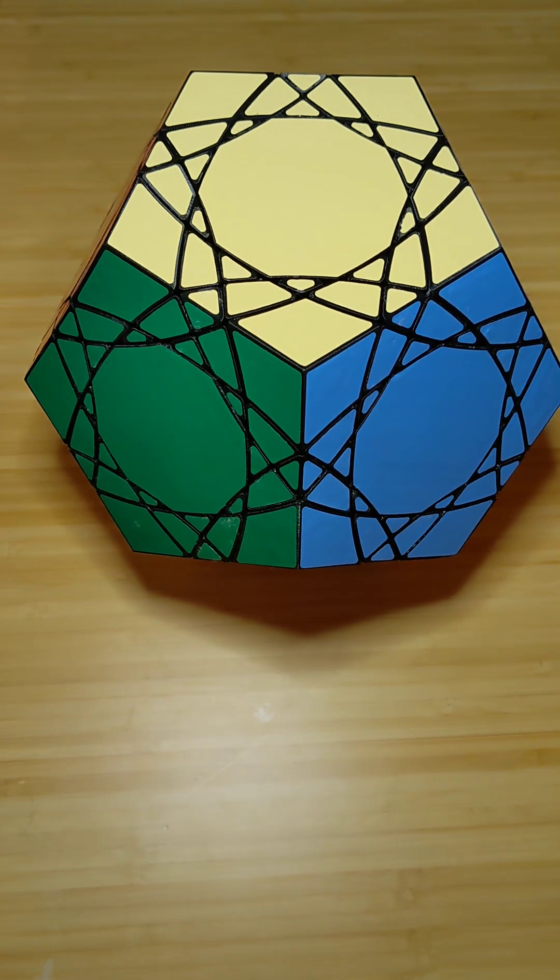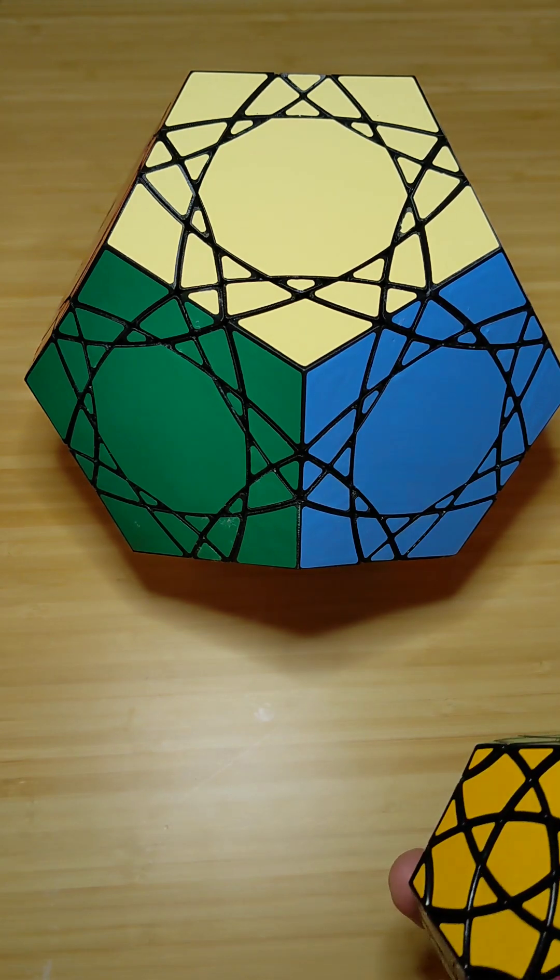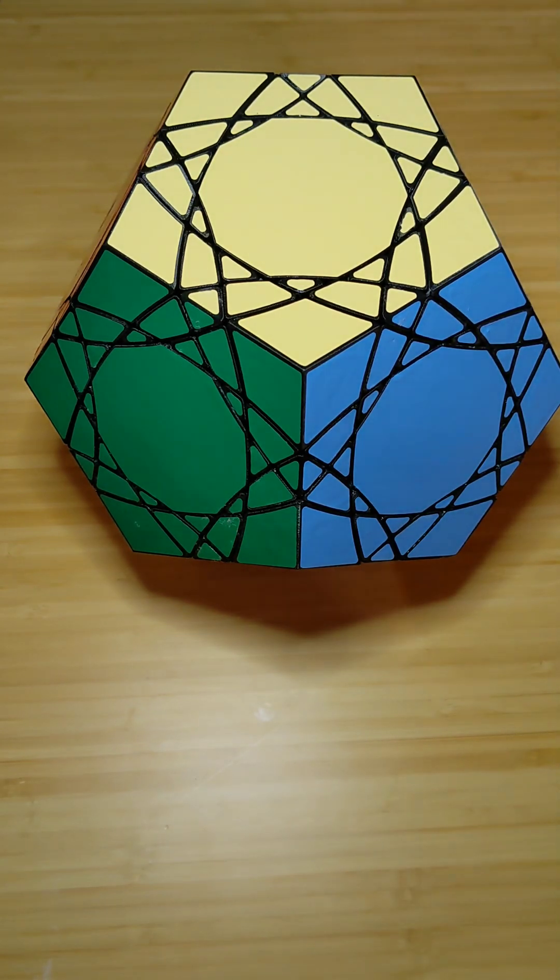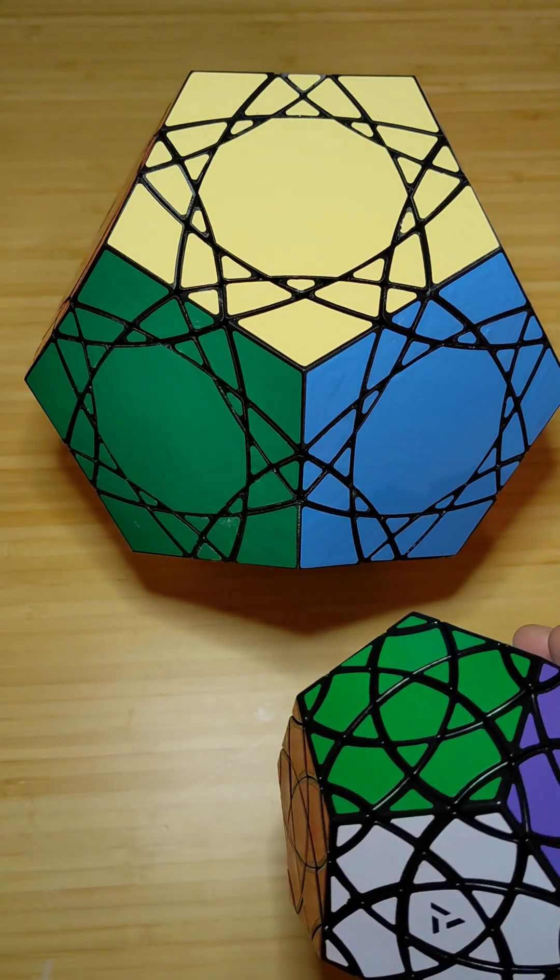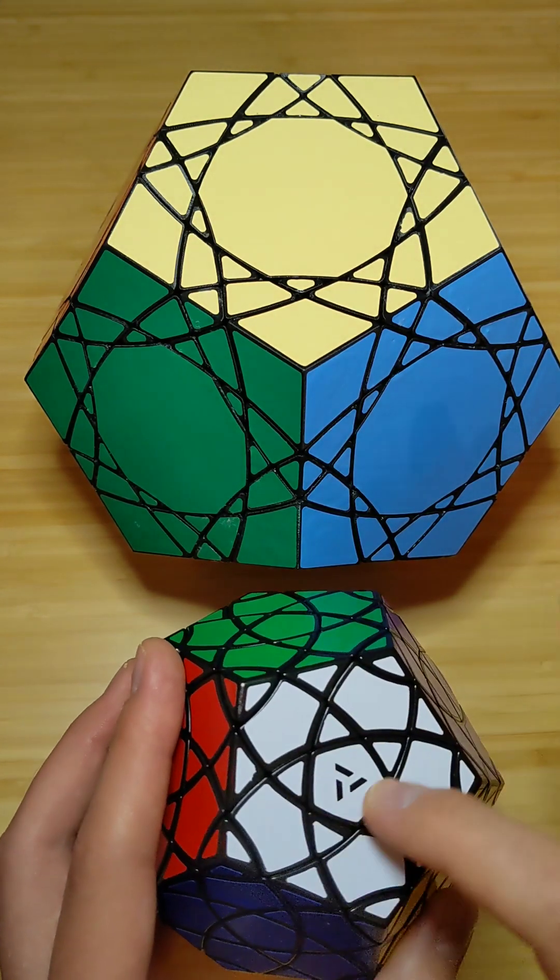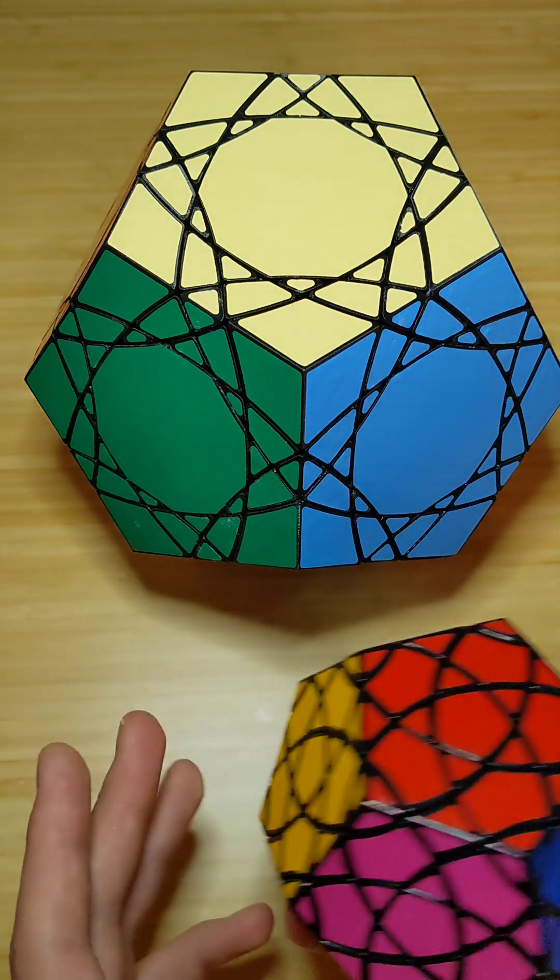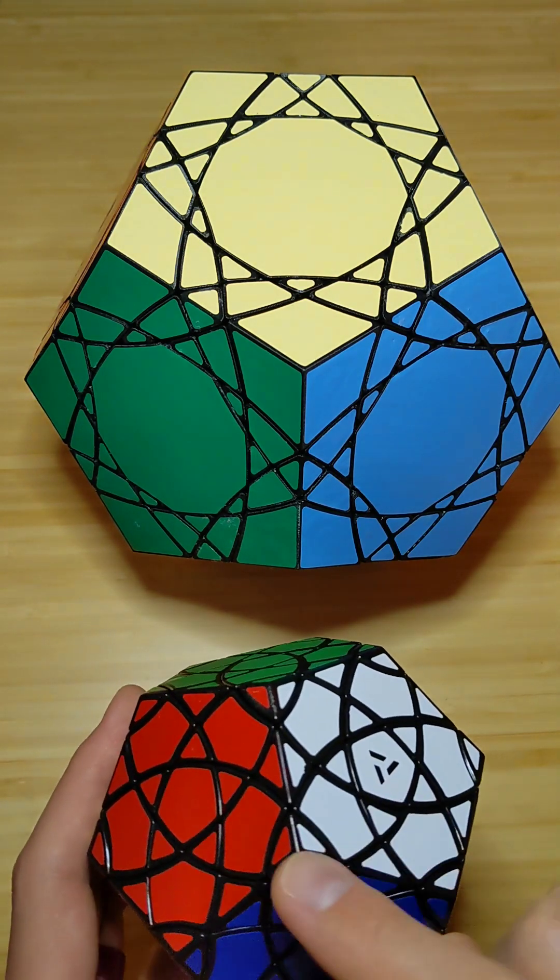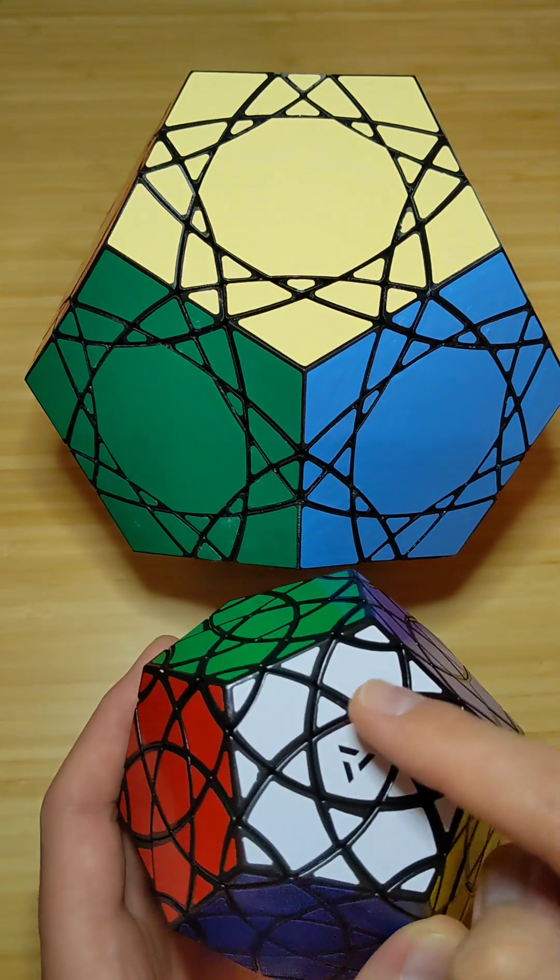I actually prefer the corner-turning dodecahedron format to the face-turning icosahedron format because the solution is mostly the same, but some of the setup moves for the various kinds of pedals are less involved. So, these pedals. And then I also find it interesting to have these pieces be rotation-sensitive instead of these.